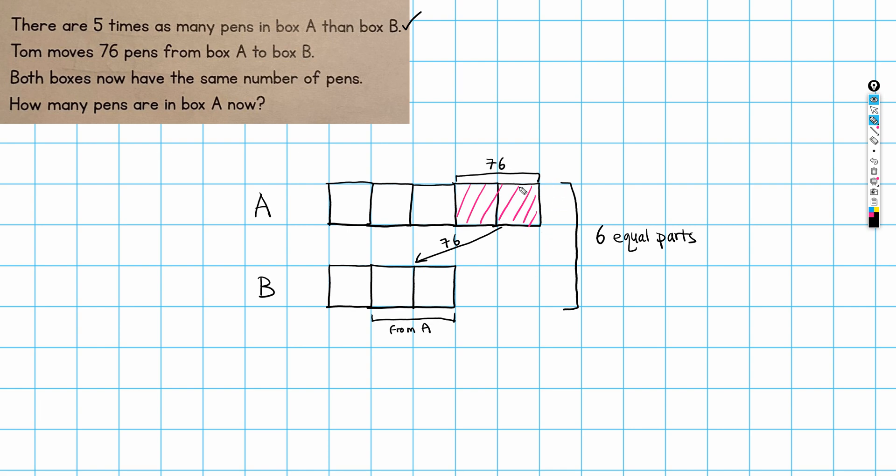So two parts we now know has a value of 76. And if two equal parts has a value of 76, then we can calculate the value of one equal part. So one part is equal to 76 divided by two. And when we do that, we get 38. So I now have a value for each of the parts. So that has a value of 38. So does that. So does that. I don't have to draw this all in, but that's just to show you what's going on.